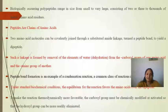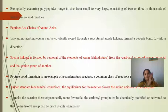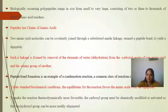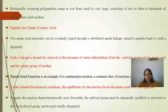Biologically occurring polypeptides range in size from very small to very large, consisting of two to three thousand linked amino acid residues. Peptides are chains of amino acids. Peptides are of different types: dipeptide, polypeptide, and proteins — this is the main topic. Peptides and proteins, which are different forms, are called polymerization products of amino acids.